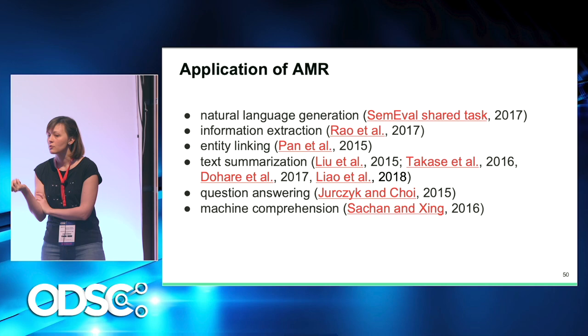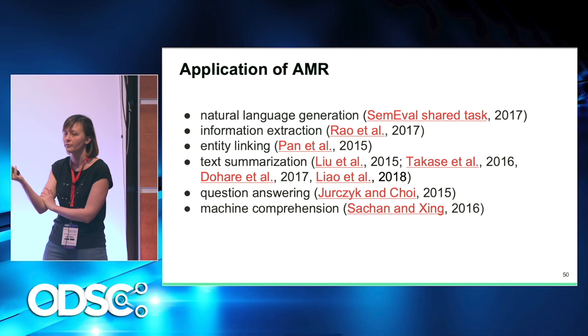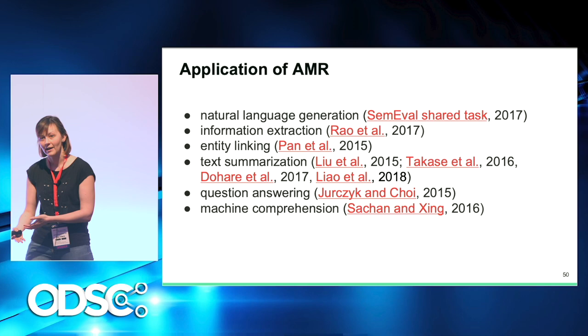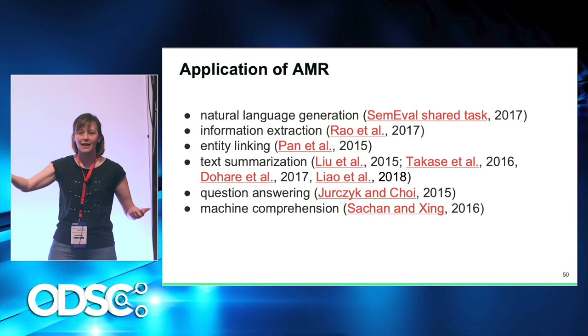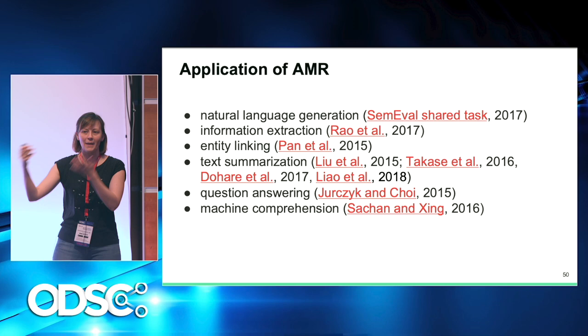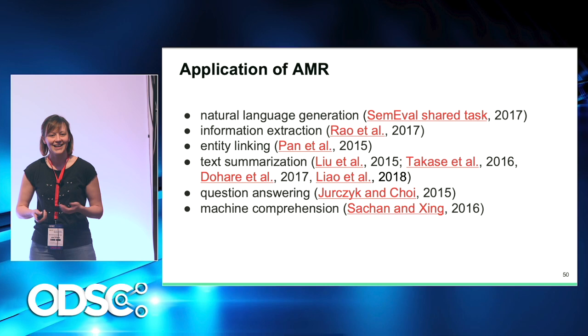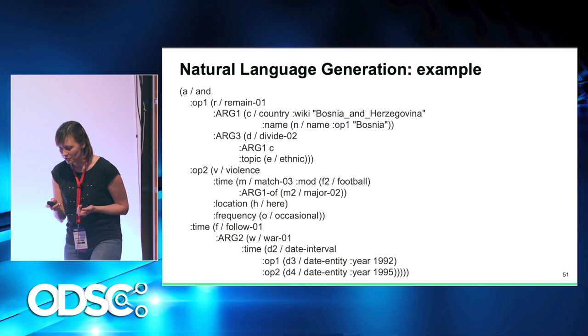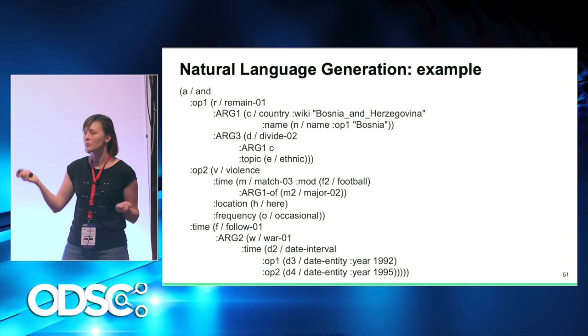As you know, we still don't have a good way to do controlled natural language generation. We can use neural network models to generate text similar to other text, but what if we want to generate text with a specific meaning — paraphrase something in natural language? How about controlled natural language generation from AMR? This is one example AMR from the 2017 shared task on natural language generation.